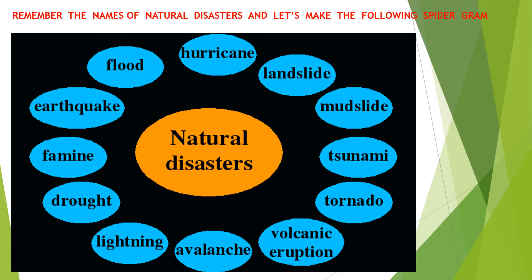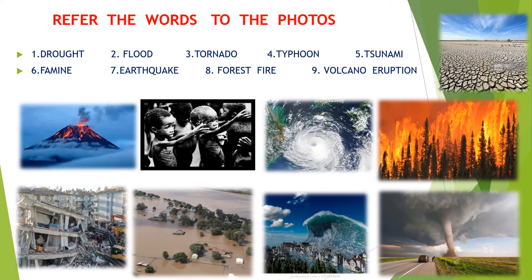Remember the names of natural disasters and let's make the following spidergram. Refer the words from the spidergram to the photos. You know that many natural disasters are interrelated. For example, earthquakes can cause tsunami and drought can lead to famine.